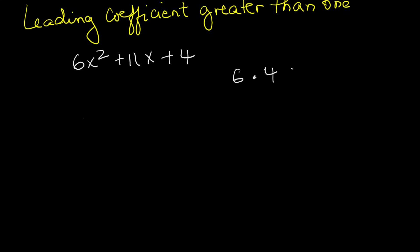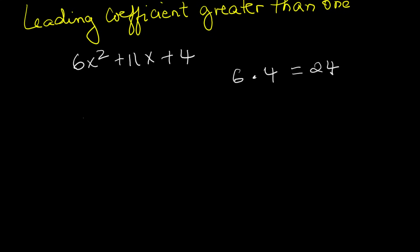Multiply the first coefficient, which is 6, by the last coefficient, which is 4. That gives 24. Now find two numbers that multiply to 24 and add to the middle number, which is 11. That pair is 3 and 8.